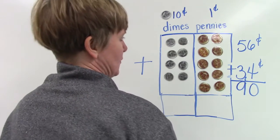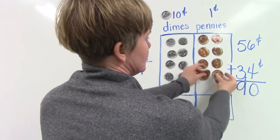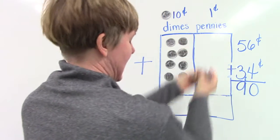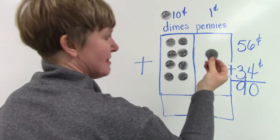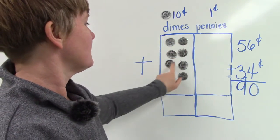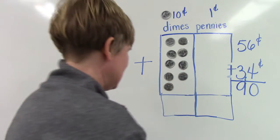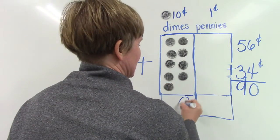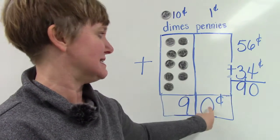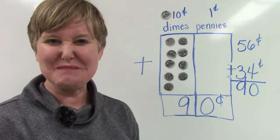Well let's trade these pennies for a dime: 2, 4, 6, 8, 10. That gives us an extra dime over here: 10, 20, 30, 40, 50, 60, 70, 80, 90 cents. We see that there are zero pennies but nine dimes.